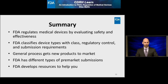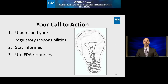Let's recap what we covered. FDA regulates medical devices by evaluating their safety and effectiveness. FDA classifies device types and assigns them to classes with regulatory controls and submission requirements. There is a general process for getting a new product to market and different types of regulatory submissions. We identified three resources to help you: Device Advice, CDRH Learn, and the Division of Industry and Consumer Education. Understand your regulatory responsibilities, stay informed of current FDA policies, and use the available FDA resources. We thank you for your investment in the public health and bringing safe and effective medical devices to patients. Thank you for watching.